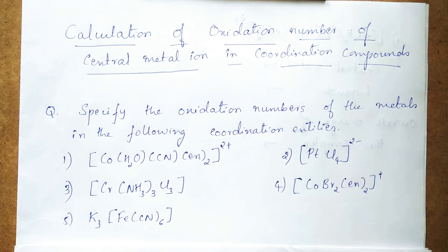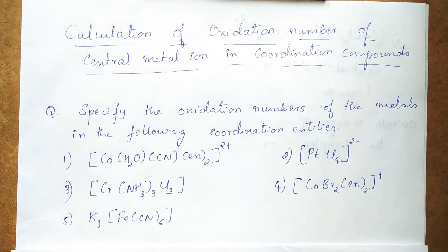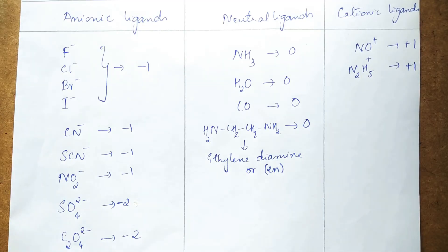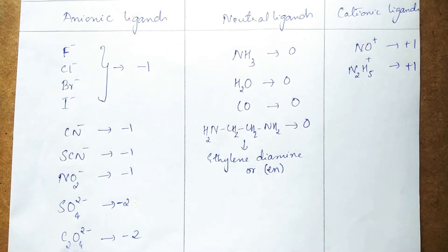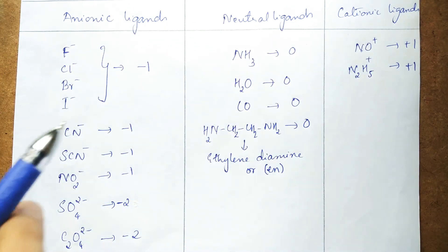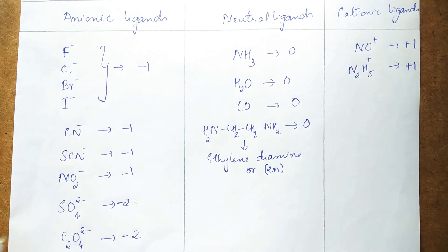Before calculating the oxidation numbers, you should have basic knowledge about commonly found ligands and their charges. I have prepared a table which contains examples of some commonly found anionic, neutral, and cationic ligands along with their charges.